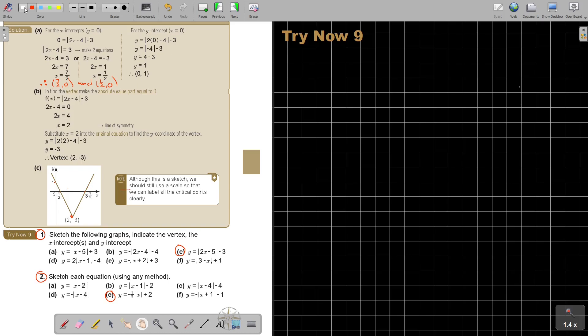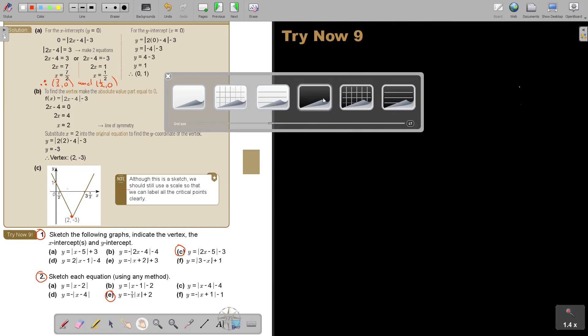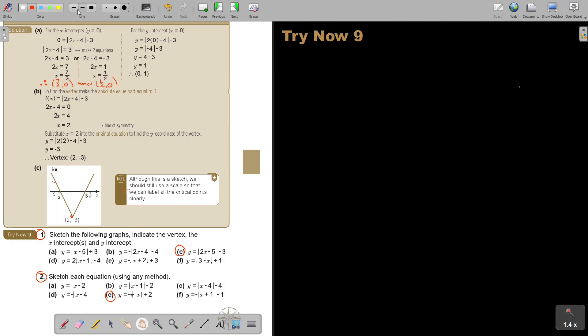Now let's do number 2e. I'm just going to keep my grid. Let's just first make it plain. Then I will bring my grid in later. So, number 2e. So, y is equal to negative 1 third x. Oh, this is nice. Plus 2. So, let's just start. This is the x-intercept. And always remember, make the opposite one 0.